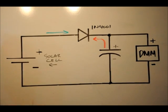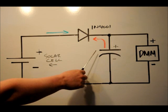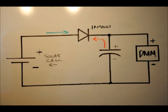So again, solar cell, 1N4001 diode, supercapacitor, and a digital multimeter. Let's just go through a quick Mickey Mouse example.